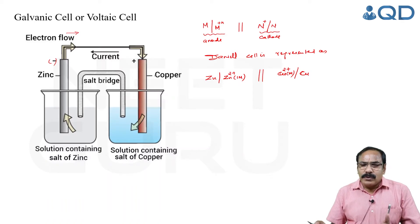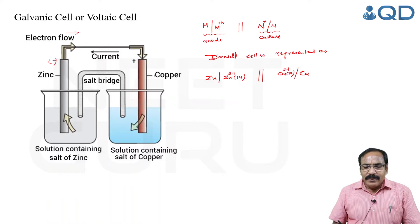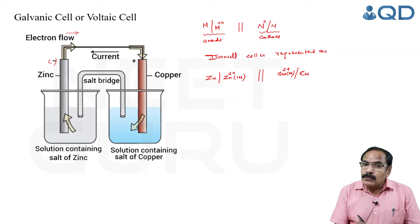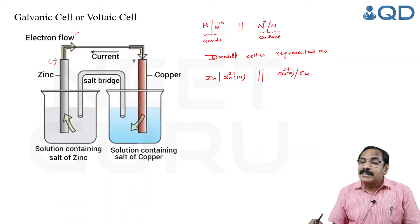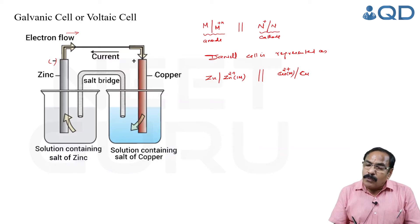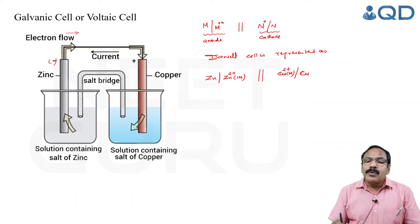The electromotive force, or EMF, is the potential difference between the cathode and anode. Just as light flows from hot to cold, water flows from high altitude to lower altitude due to pressure difference, and heat flows from hot to cold due to temperature difference — similarly, for electric current to flow there must be a potential difference. The potential difference between cathode and anode of a galvanic cell is called EMF.